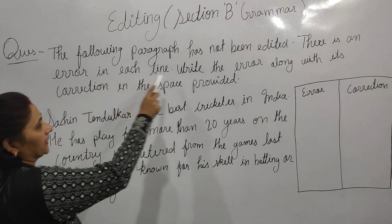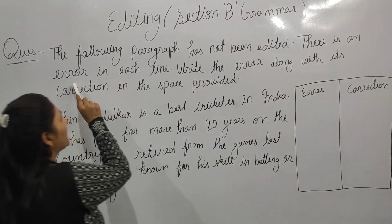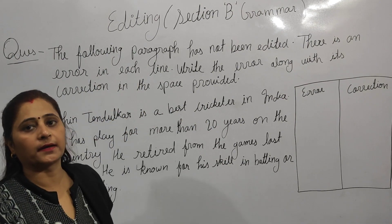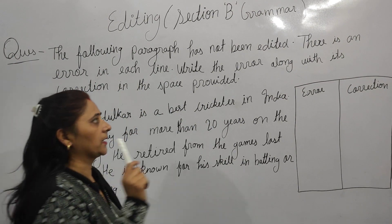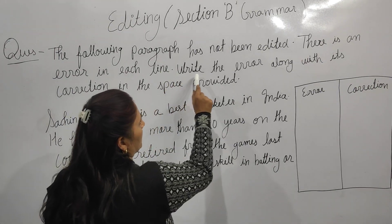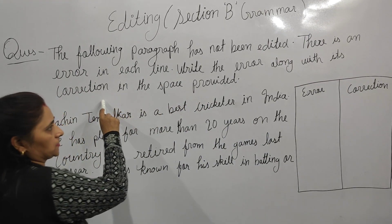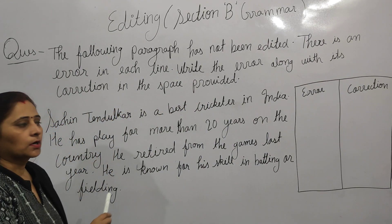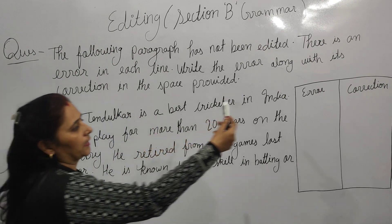In each line, it is clearly stated: there is an error in each line. It means only one error in each line — line by line, one error should be there. Now, write the error along with its correction. You have to show the error and also write the correction.